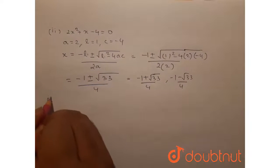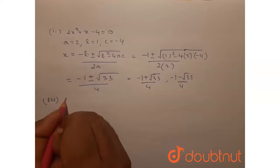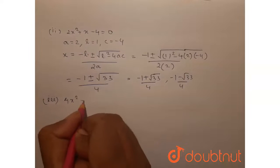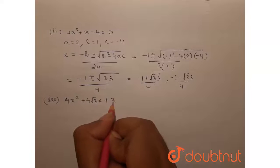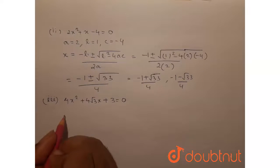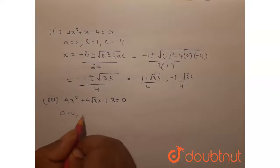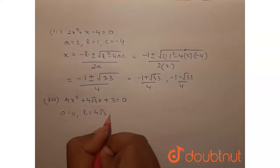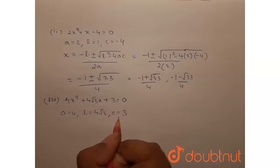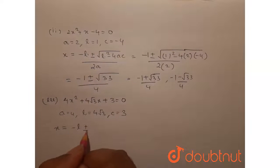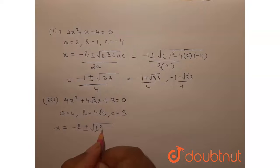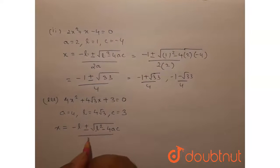Let's move on to the third one. The third question is 4x squared plus 4 root 3 x plus 3 equals 0. Again, comparing with the standard equation, we have a equal to 4, b equal to 4 root 3 and c equal to 3. From the same formula, the roots are given by minus b plus or minus root of b squared minus 4ac, all by 2a.